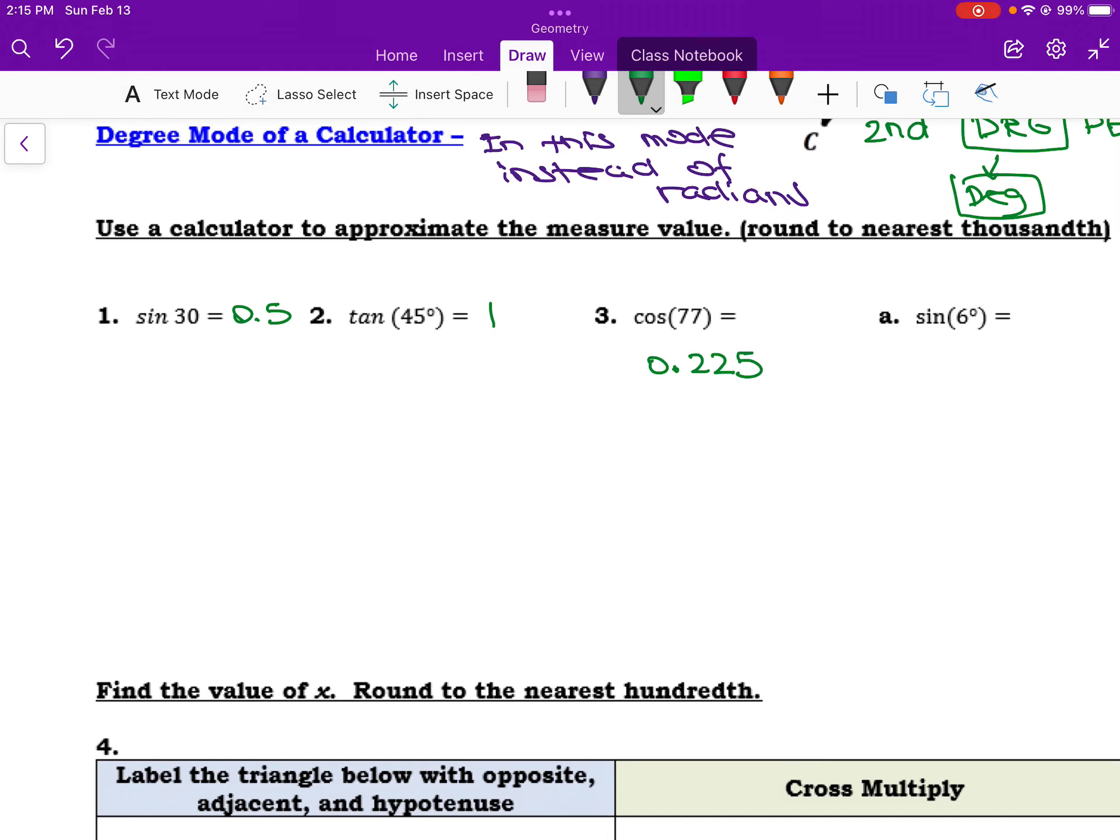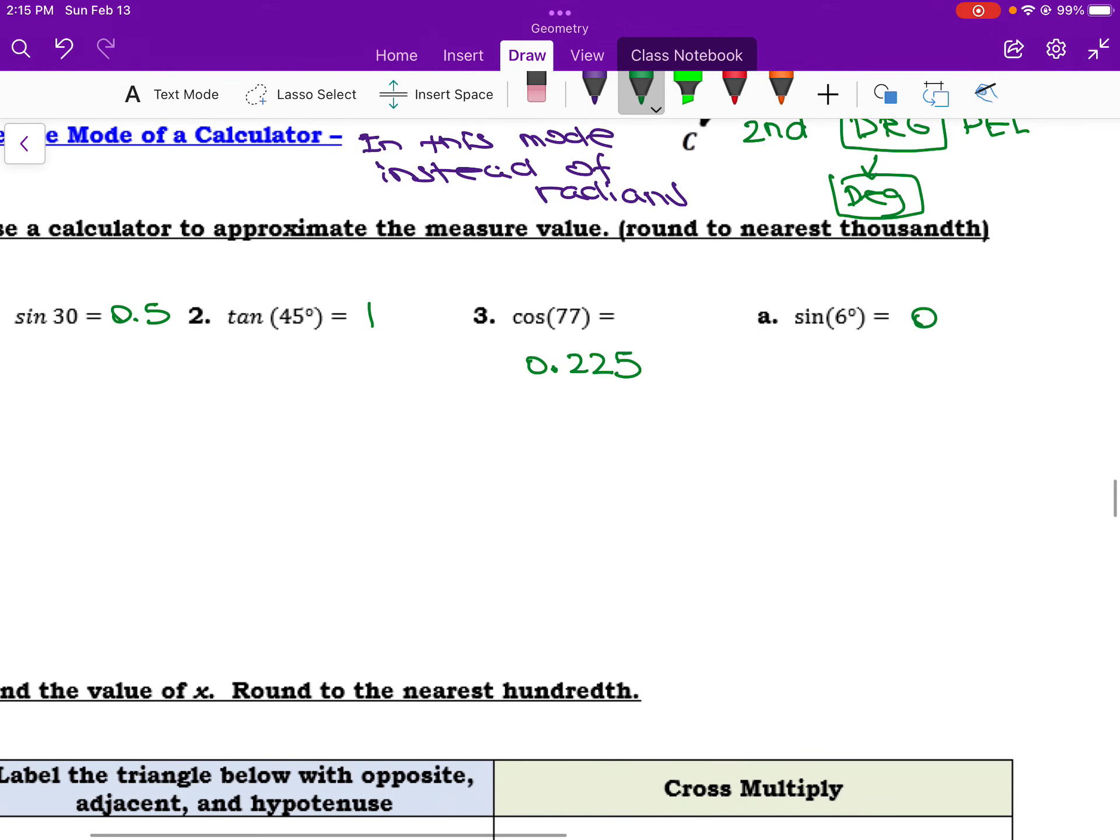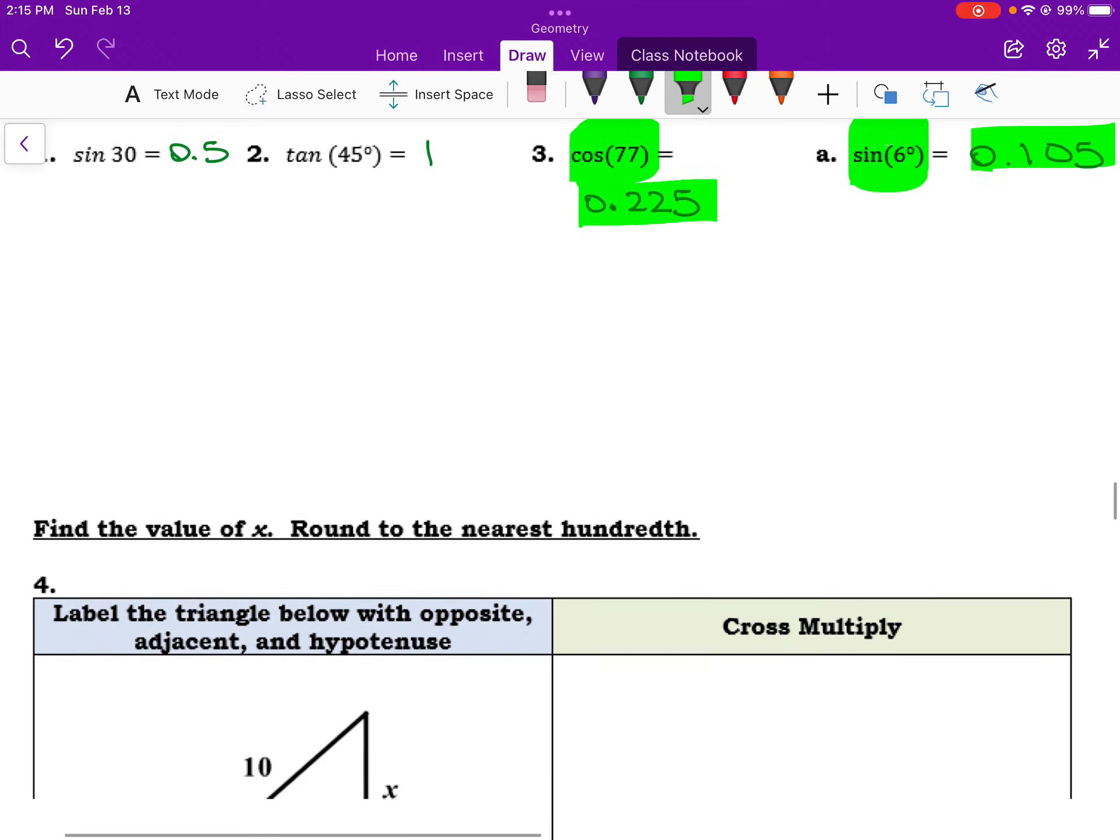Okay, sine of 6 degrees, I'm hitting sine 6, I'm going to have to round this one too. 0.105. So again, these are simplified ratios. Notice that these two were not friendly because in this case, the adjacent hypotenuse pairing, and in this case, the opposite hypotenuse pairing, would have reduced to a ratio that was not very friendly.